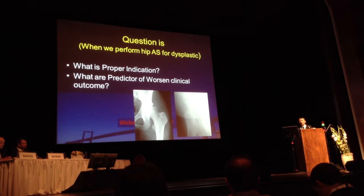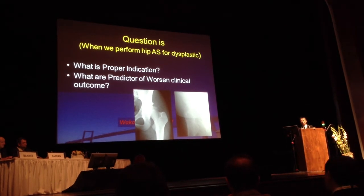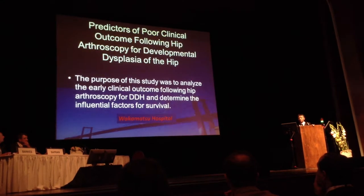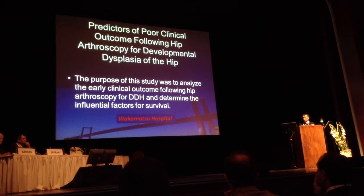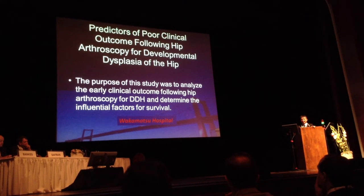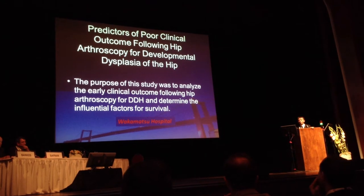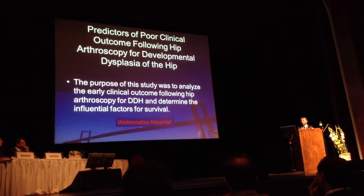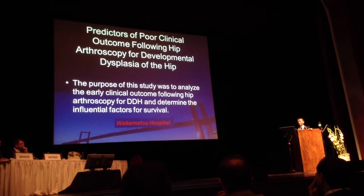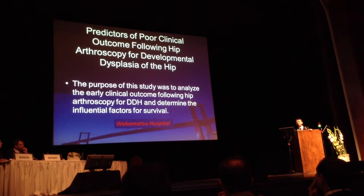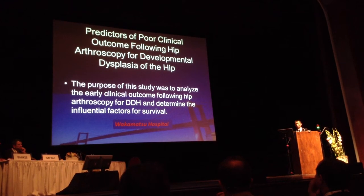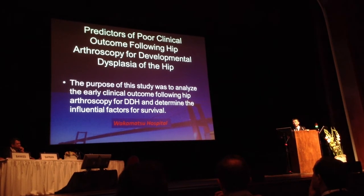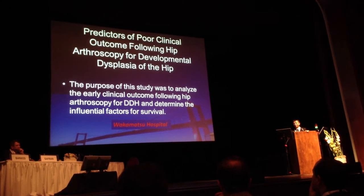We should demonstrate what the proper indications are and what the predictors of worse clinical outcomes are. This study — which I'm supposed to present at the next academy meeting — analyzes early clinical outcomes following hip arthroscopy for dysplasia and determines the influencing factors for the survival rate.